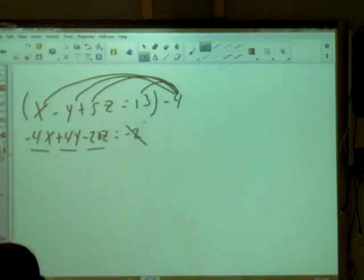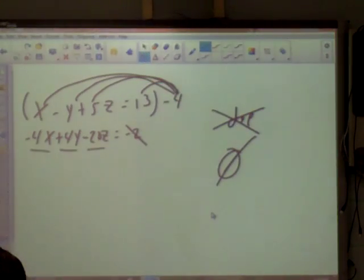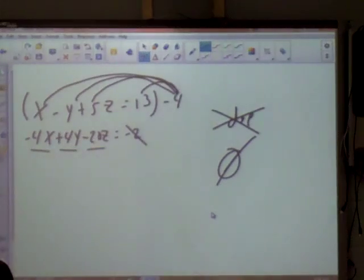So that one little piece that was not the same made those not be the same line. If it had been, if I'd have ended up with all pieces the same and it was the same line, it would be infinite or dependent. But since not, that's no solution. See how you'll have to check for that if you get an error on your calculator. You'll have to go and look and see which one it is.